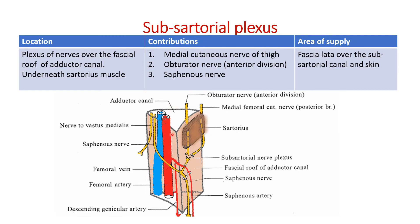Looking at the picture, you can see the adductor canal with its contents: femoral artery, femoral vein, saphenous nerve, nerve to vastus medialis, and the descending genicular artery. You are seeing the nerves passing through the roof — the saphenous nerve piercing the roof. And here you are seeing a plexus of nerves — this is the subsartorial nerve plexus in relation with the fascia roof of the adductor canal, which is the fascia vasto adductoria. You are seeing the sartorius muscle, the obturator nerve anterior division, and the medial femoral cutaneous nerve piercing the sartorius muscle.